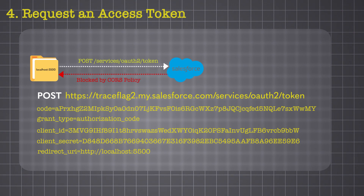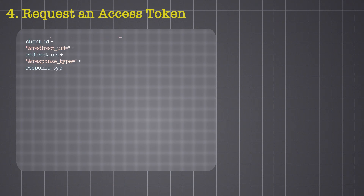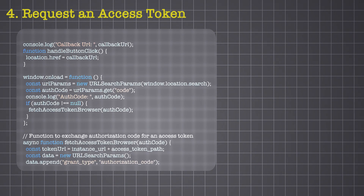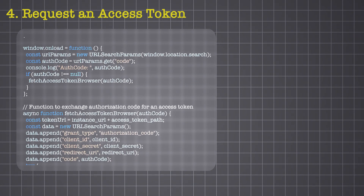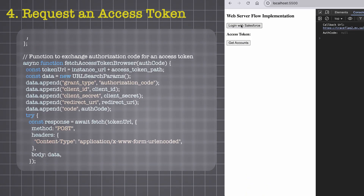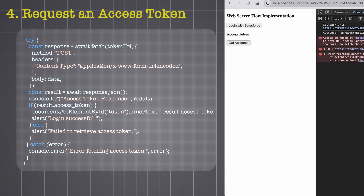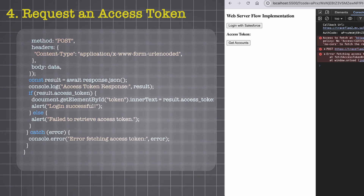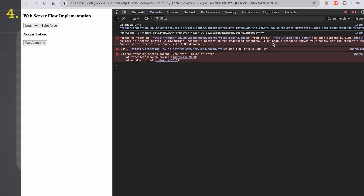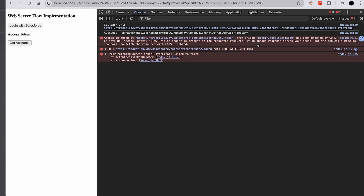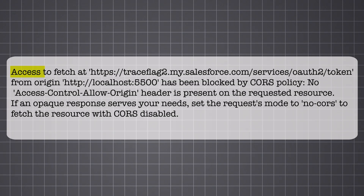Now if we do a POST request from our JavaScript application, we will get a CORS error. We've created a fetchAccessToken method that makes a POST request with all the required parameters to exchange the authorization code for an access token. This method is triggered on the window's load event when the code parameter is present in the URL. Let's look at the error, which states that access to our Salesforce endpoint from origin localhost has been blocked by CORS policy.